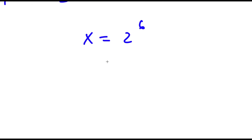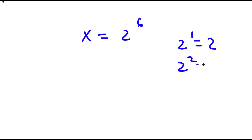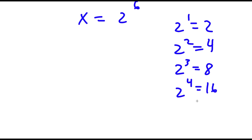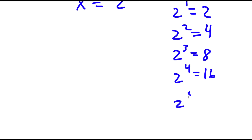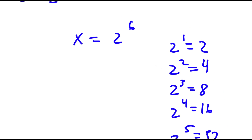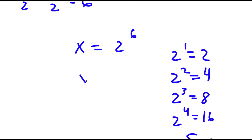And 2 to the power of 6 — well, 2 to the 1 is 2, 2 to the 2 is 4, 2 to the 3 is 8, 2 to the 4 is 16, 2 to the 5 is 32. Notice how it doubles every time, so 2 to the power of 6 would be double 32, which equals 64. So I have x is equal to 64.